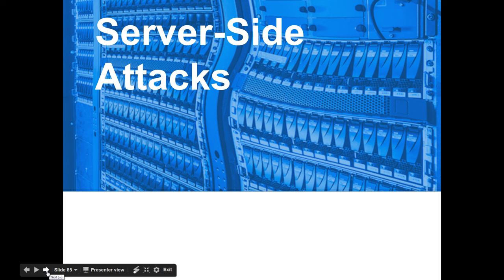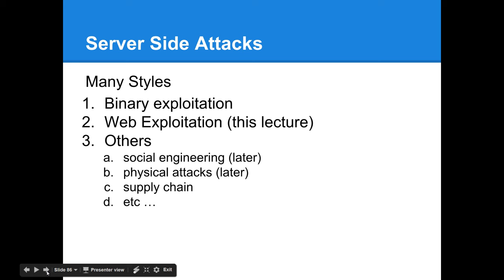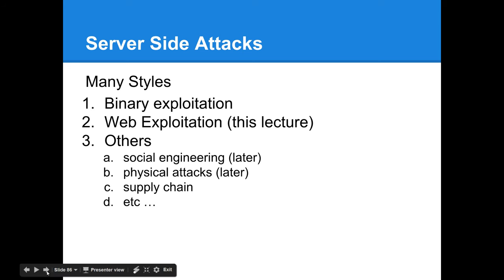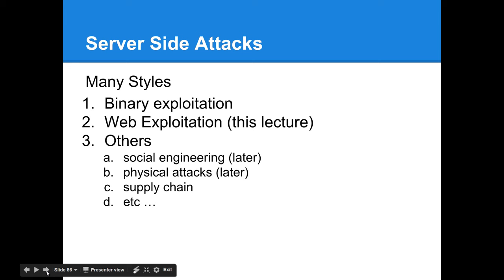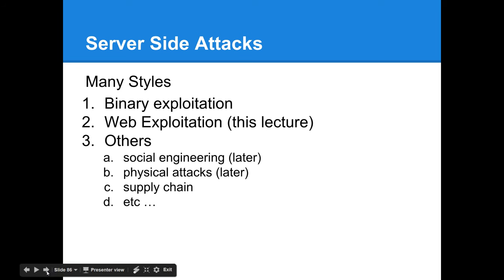We're focusing on server-side attacks. We've already covered cross-site scripting and cross-site request forgery. Server-side attacks come in many styles outside the OWASP categories and include binary exploitation — which has declined as web servers have become more secure — web application hacking, and other styles involving social engineering targeting admins, physical attacks targeting data centers, supply chain attacks, and so on.